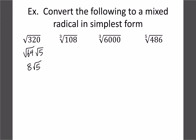For cube roots you just use the cube root list. For ∛108: does 64 divide 108? No. Does 27 divide 108? Yes — 27×4=108. So we have ∛27 × ∛4. The ∛27 simplifies to 3, giving us a final answer of 3∛4.